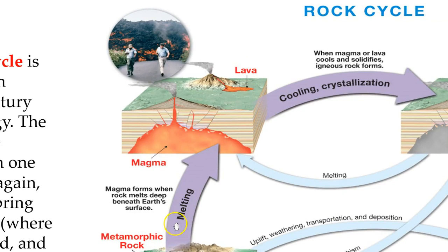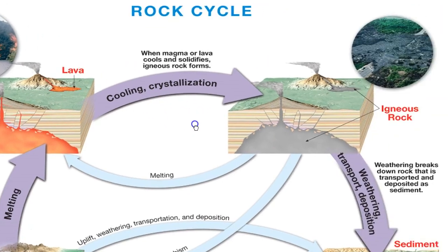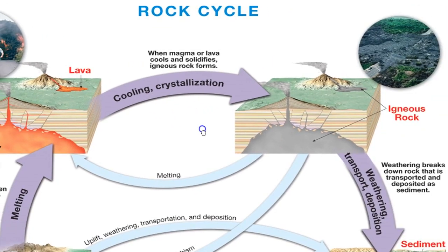The first thing you're going to notice whenever you start looking at igneous rocks is that igneous rocks form either from magma or from lava. The primary process to stress here is the process of cooling and crystallization — that actually takes and makes igneous rock.